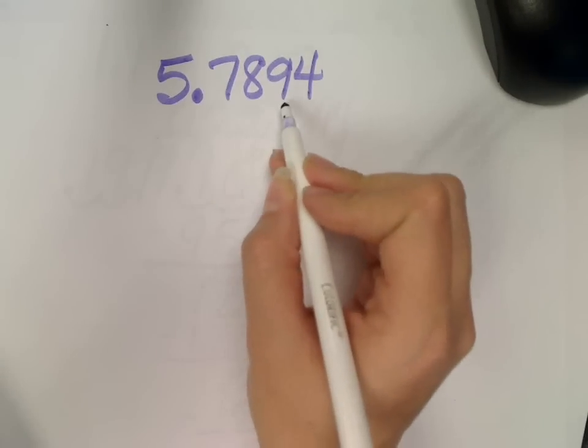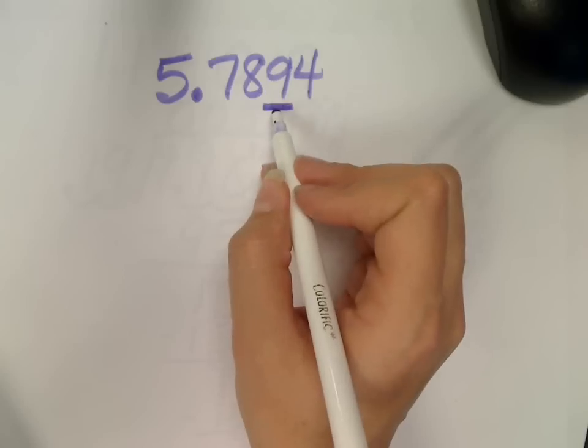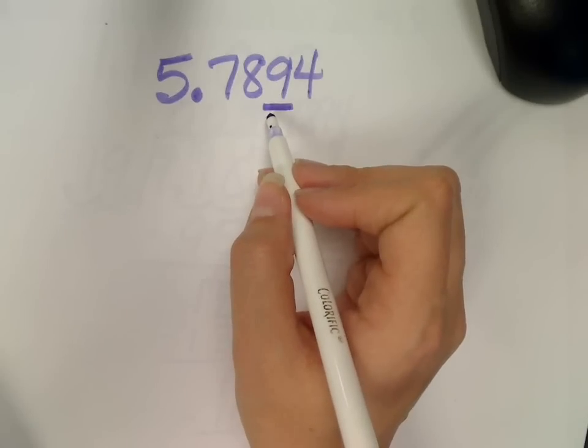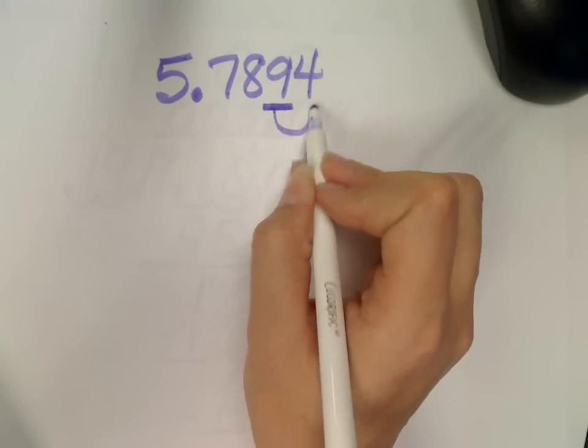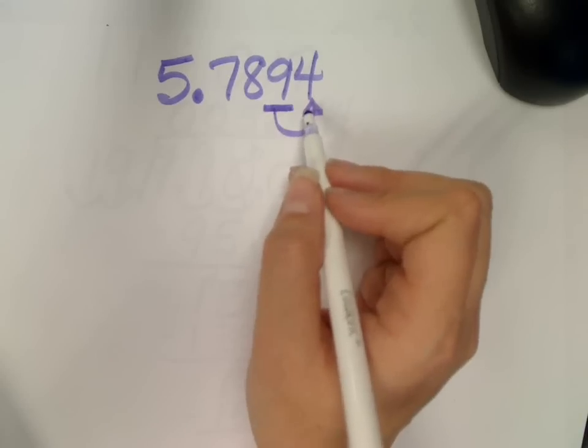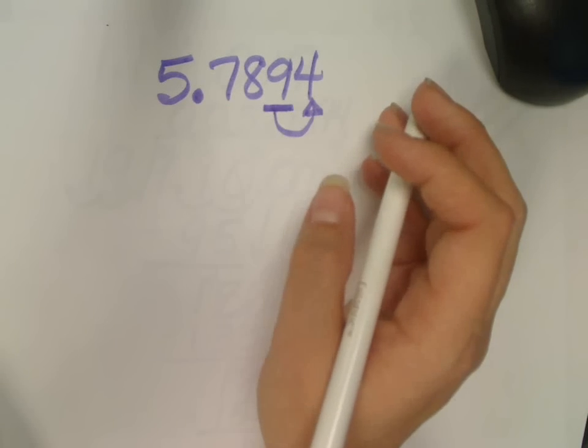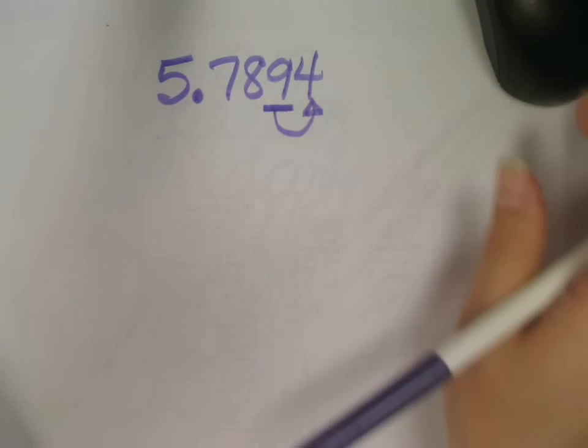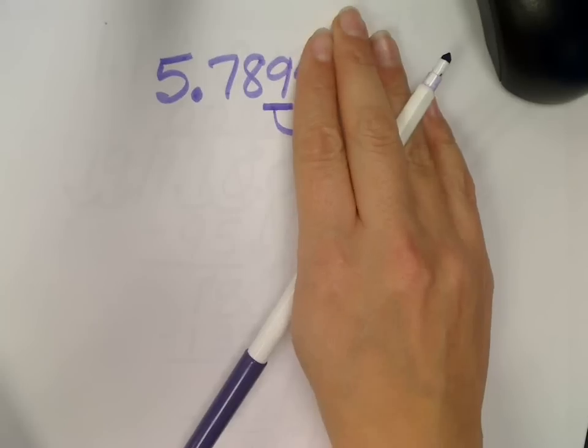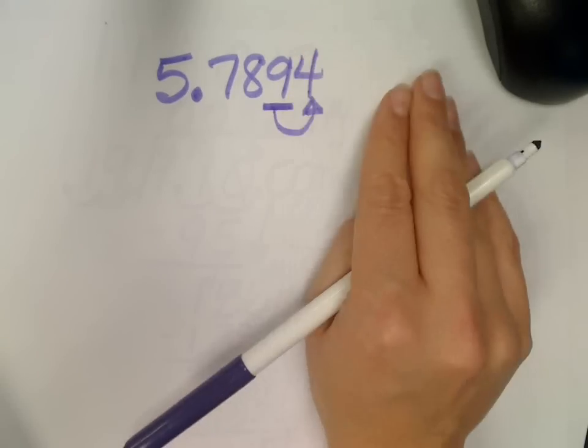Tenths place, hundredths place, thousandths place, which means this one, two, three numbers after is what I should be having with my answer. I look to its right neighbor, because he always tells me the right answer. If it's five or more, I add one. If it's four or less, I let it rest. So, which do I do? Let it rest. So, that nine stays the same, and so does everything else, but everything after the nine drops off. It doesn't count.